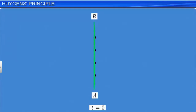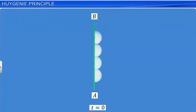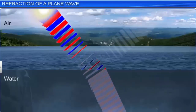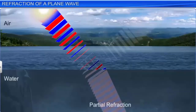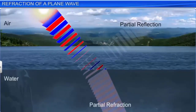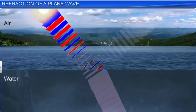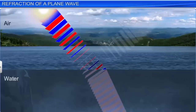According to Huygens principle, each point of AB acts as a source of secondary wavelets. The radii of these spheres will be Vt after t seconds. The plane touching these small spheres in the forward direction gives the shape and location of the new wave front after t seconds. When light waves are incident on an interface of two transparent media, light gets partially refracted and partially reflected. Using the Huygens principle, we can derive the laws of refraction and reflection and show that these laws are consistent with the wave nature of light.